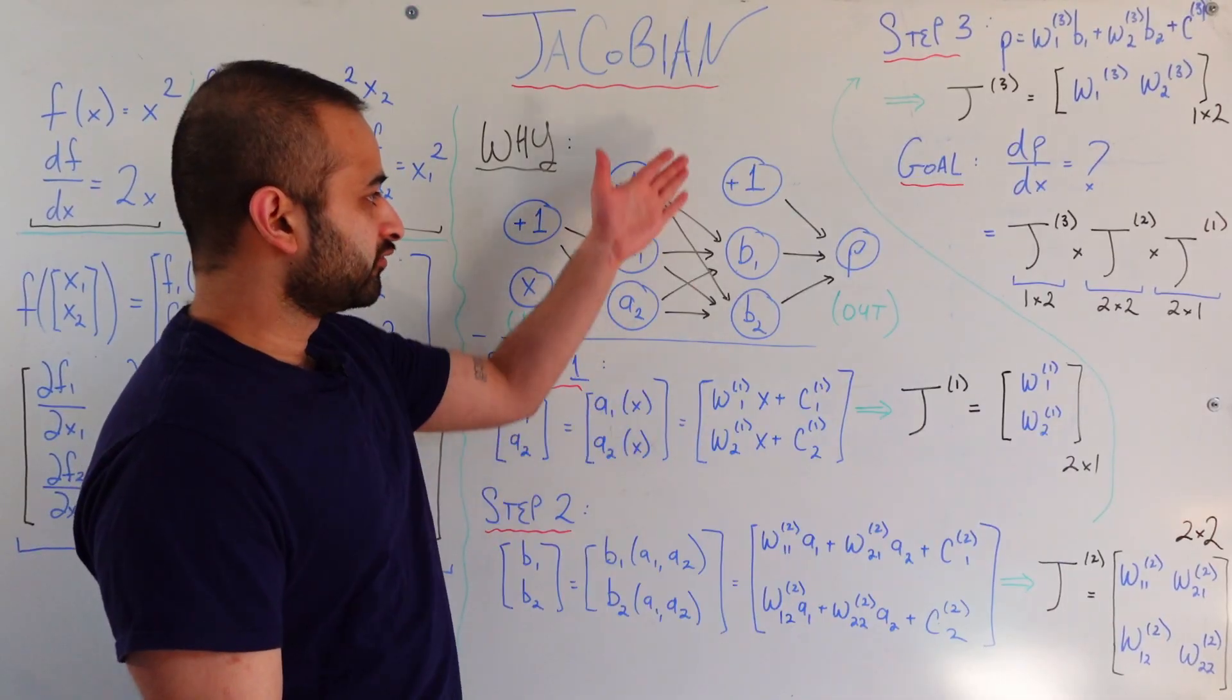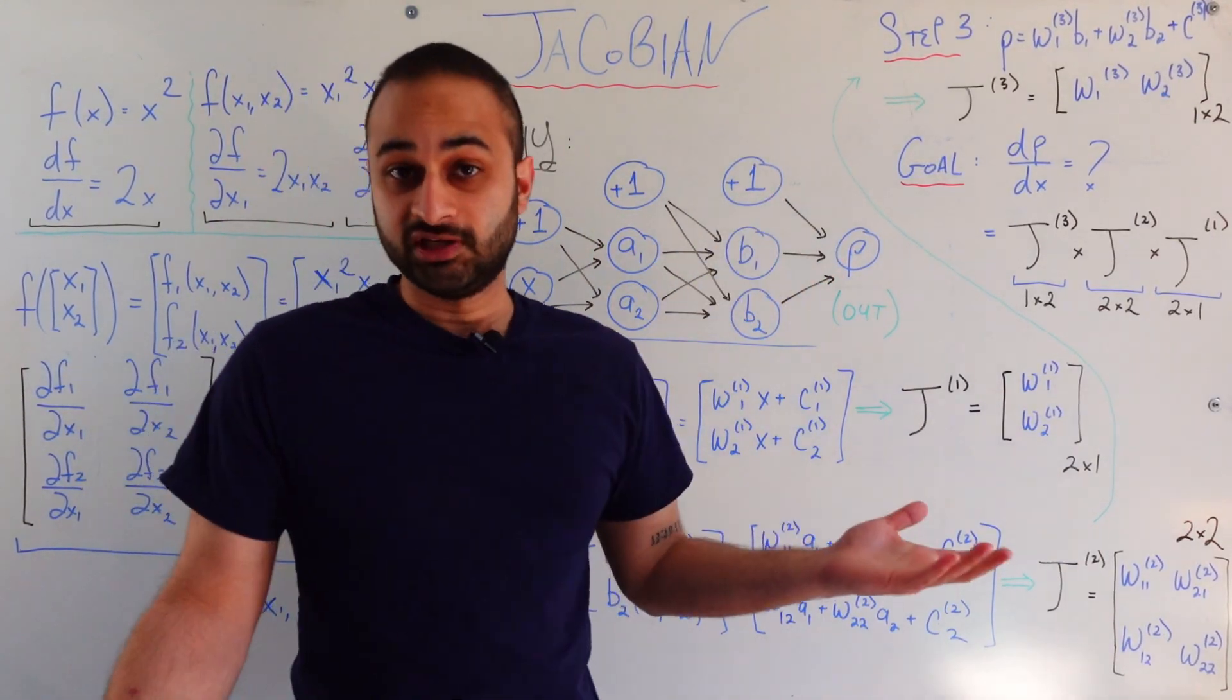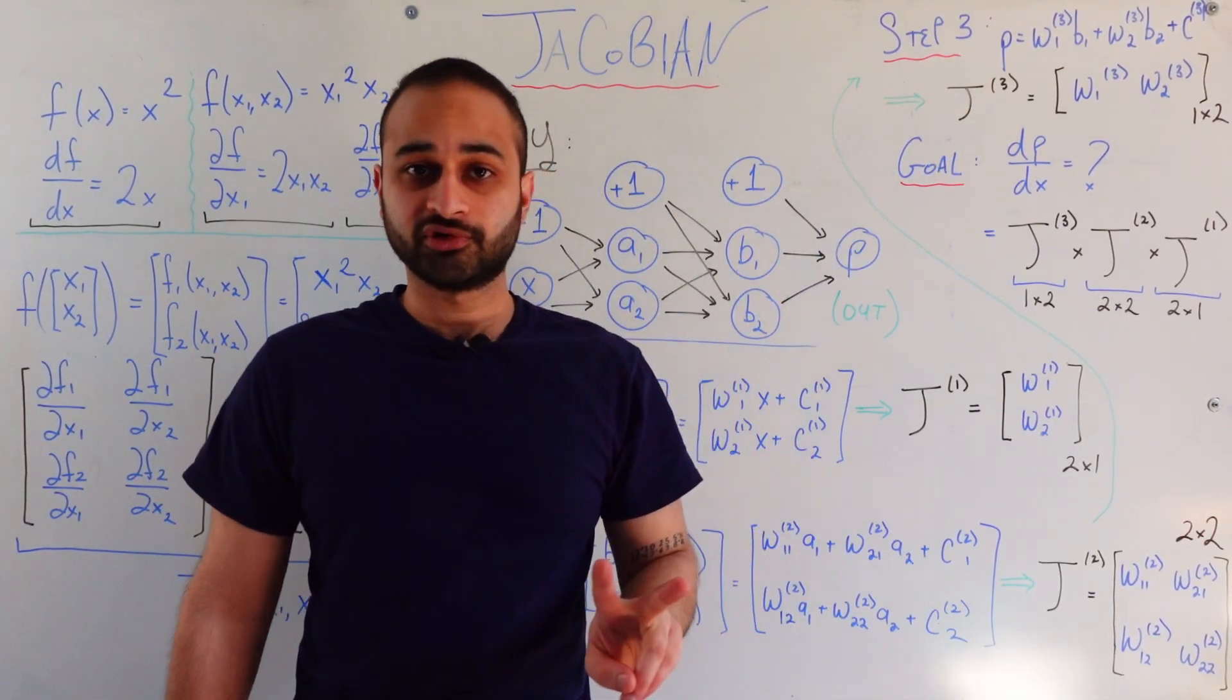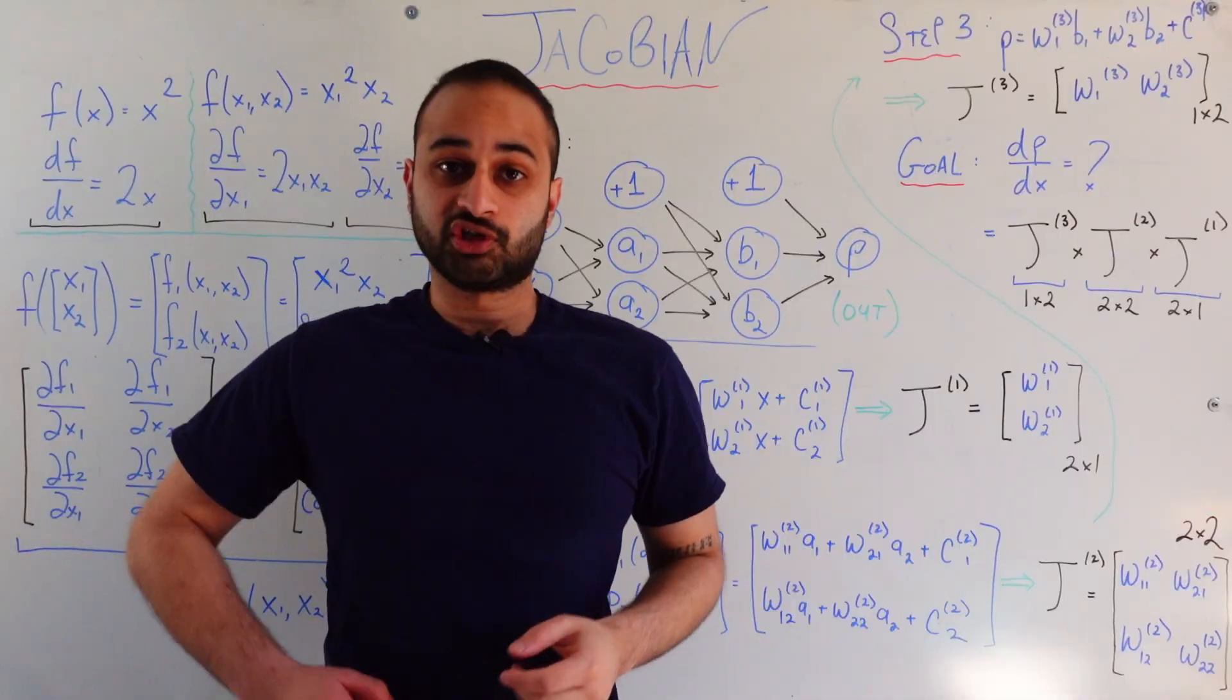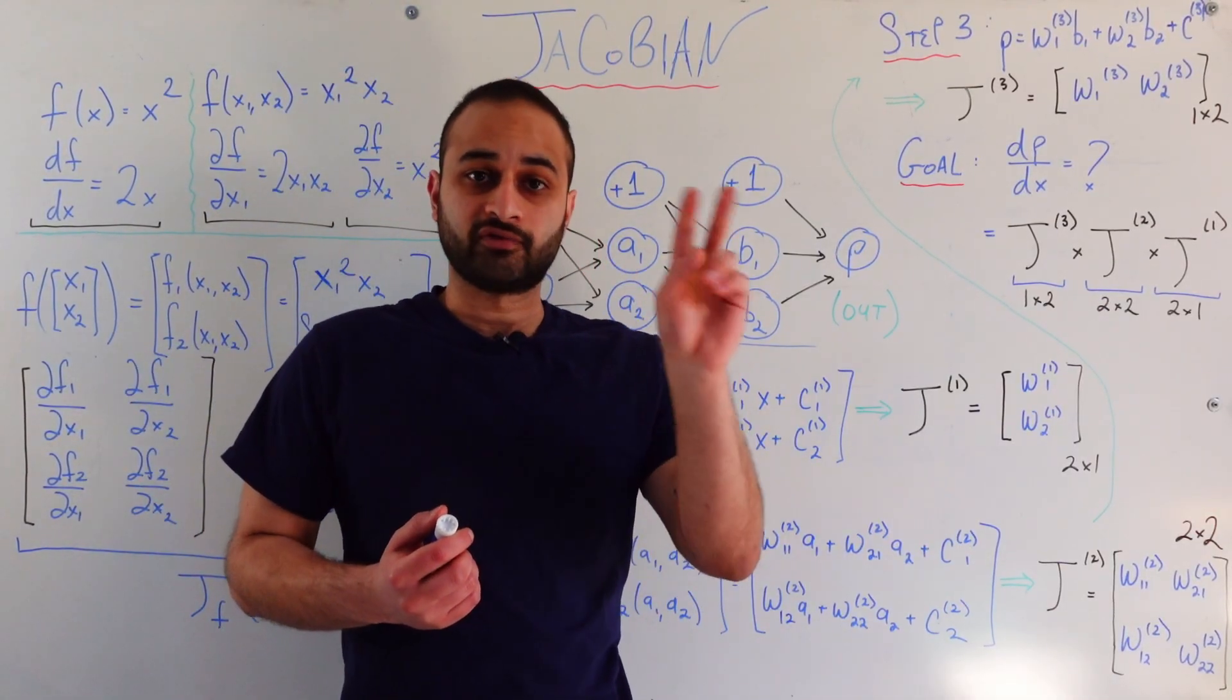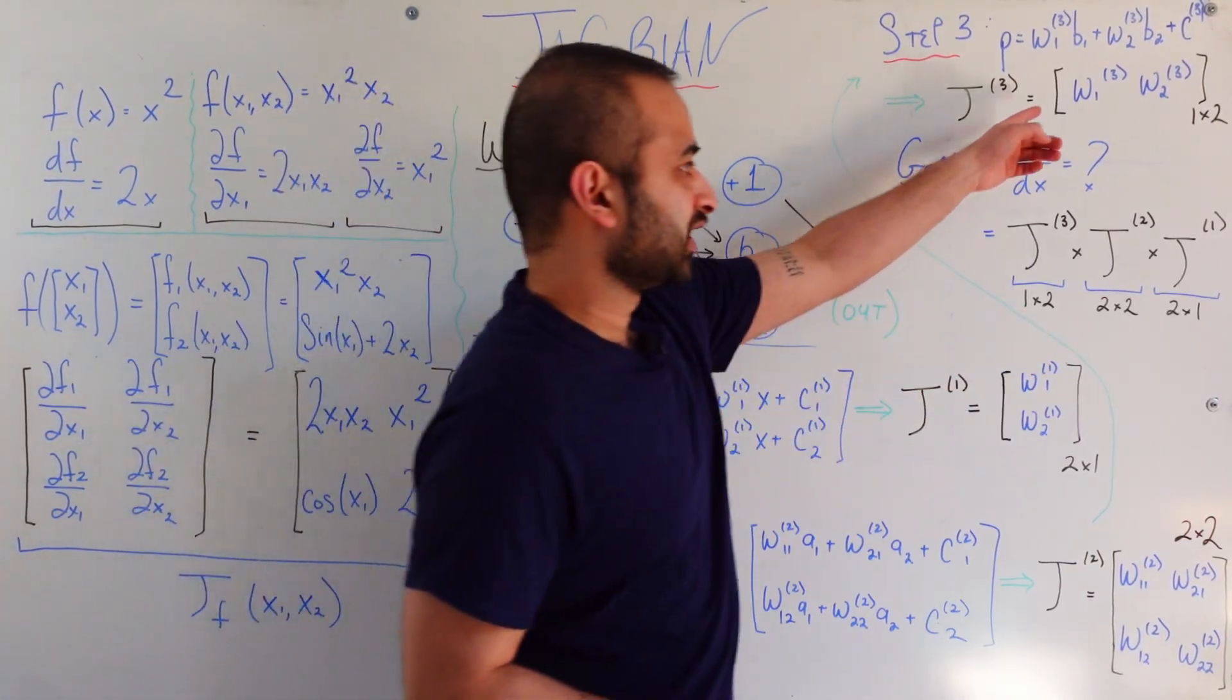So we have a two by two Jacobian here and let's go to the last part of the process. The last part of the process is going from the second hidden layer to the final output. That's even easier than the one we just looked at because that's just a function of two variables. And there's one function, one output, which is p. So explicitly that looks like this. We can take the Jacobian of this step two. In this case, there is one function of two variables. So the Jacobian is going to be one by two. And it looks like this.